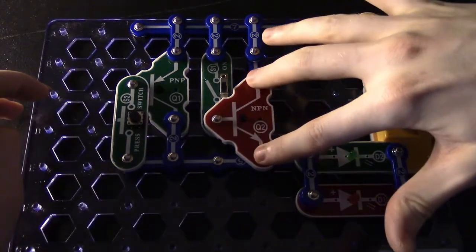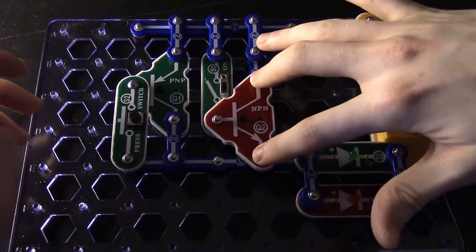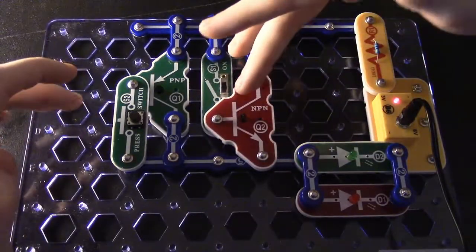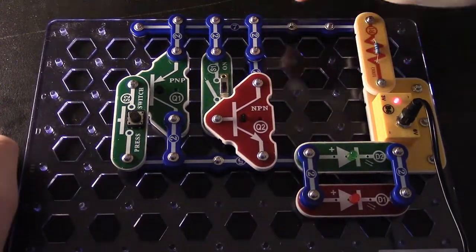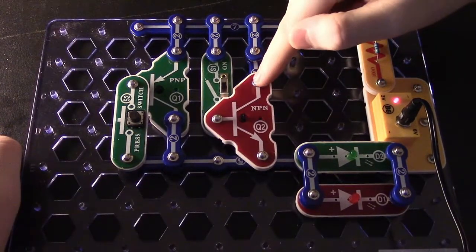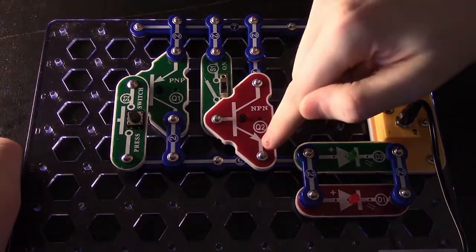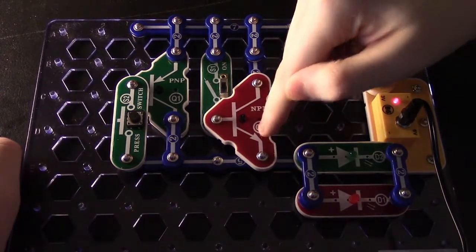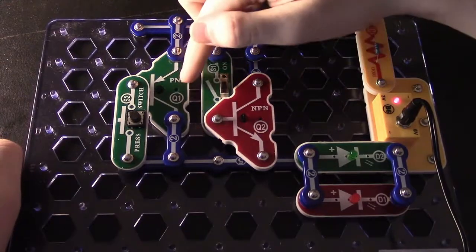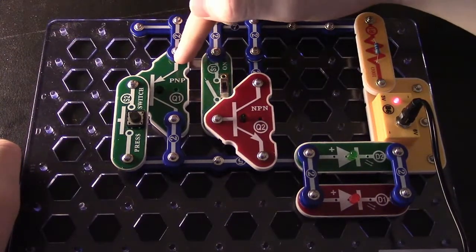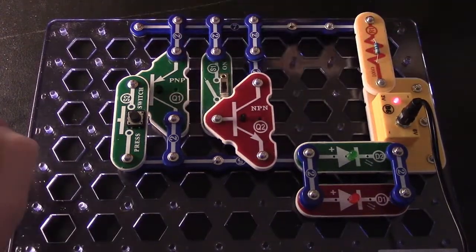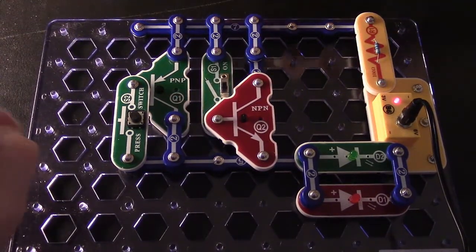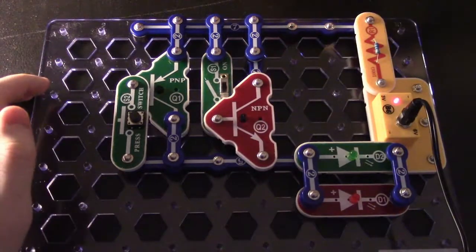These other two points is where our emitter and collector is. Depending on the type of transistor, it depends where those are. On an NPN, the collector is on the top and your emitter is at the bottom where the arrow is. On the PNP, your emitter is on the top because that's where the arrow is located and your collector's on the bottom.